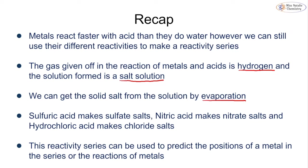We also looked at the different types of salts: sulfuric acid makes sulfate salts, nitric acid makes nitrate salts, and hydrochloric acid makes chloride salts. We looked at the word equations for those as well. The reactivity series built from these reactions can be used to predict the position of another metal, or predict reactions if we know where the metal sits in the series.